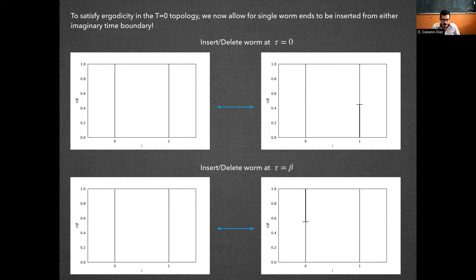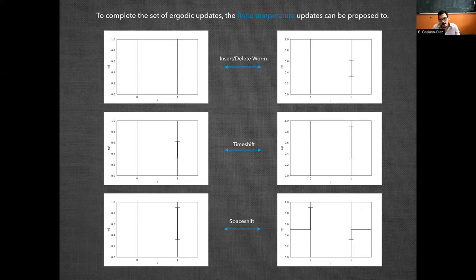The moves that we propose to add to this set of updates are the following. We can now allow for the insertion of a worm at imaginary time zero, or a worm at imaginary time beta. These two moves along with the finite temperature set of moves that have been known for quite a while should compose, should make up the set of ergodic updates for zero temperature.